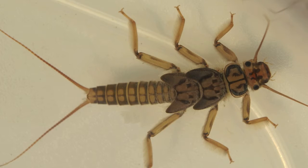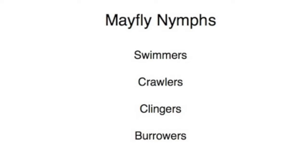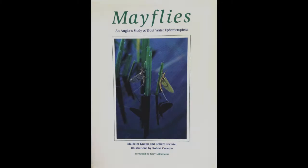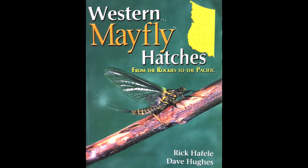The nymphs and larvae of most other organisms we have discussed should not be a problem, but occasionally a stonefly nymph may cause confusion. Remember the rule of twos that we discussed under stoneflies, and remember that stoneflies do not have abdominal gills. It is very interesting and of value to learn the various mayfly nymph shapes, but that is more complex than I want to cover in this simple entomology series.